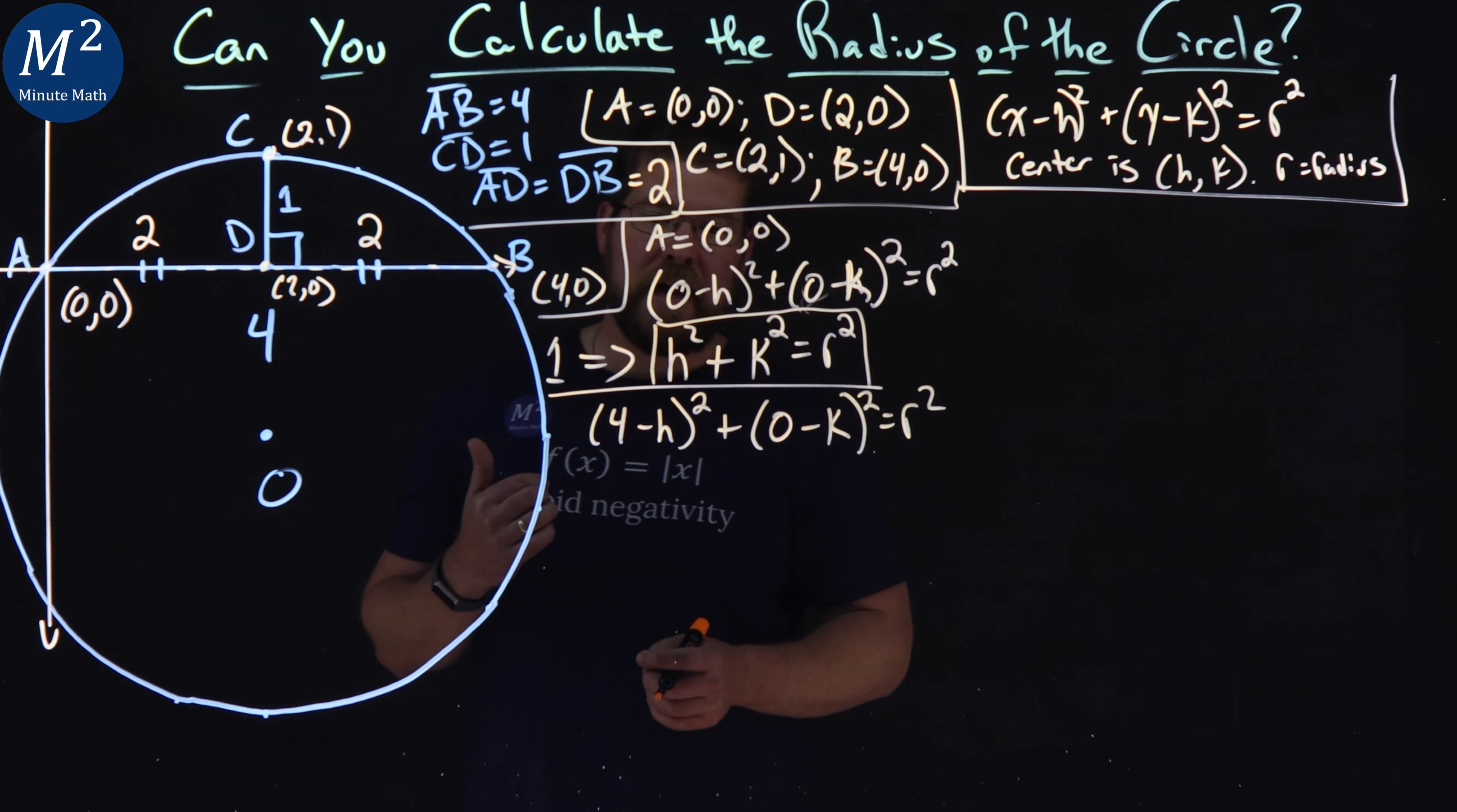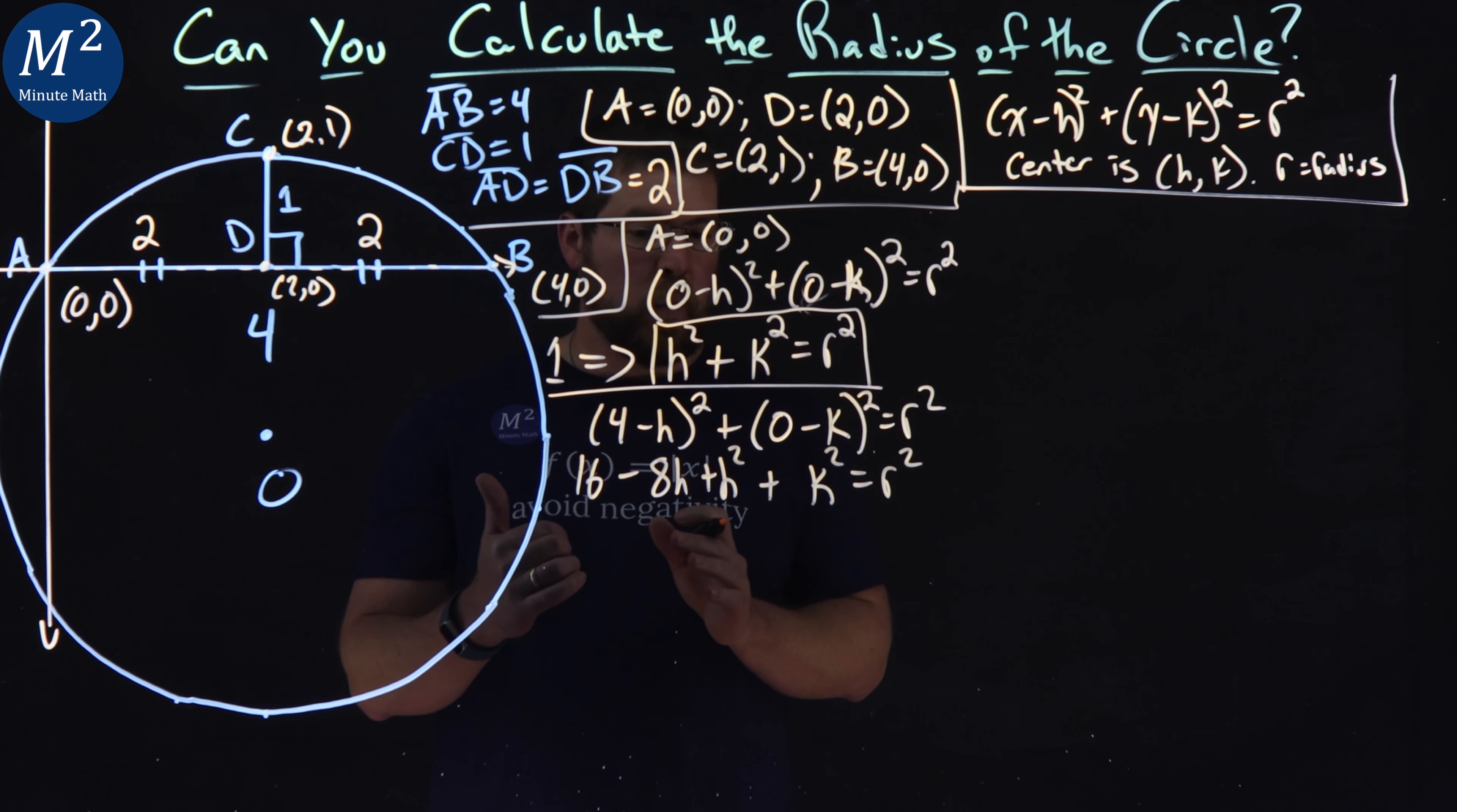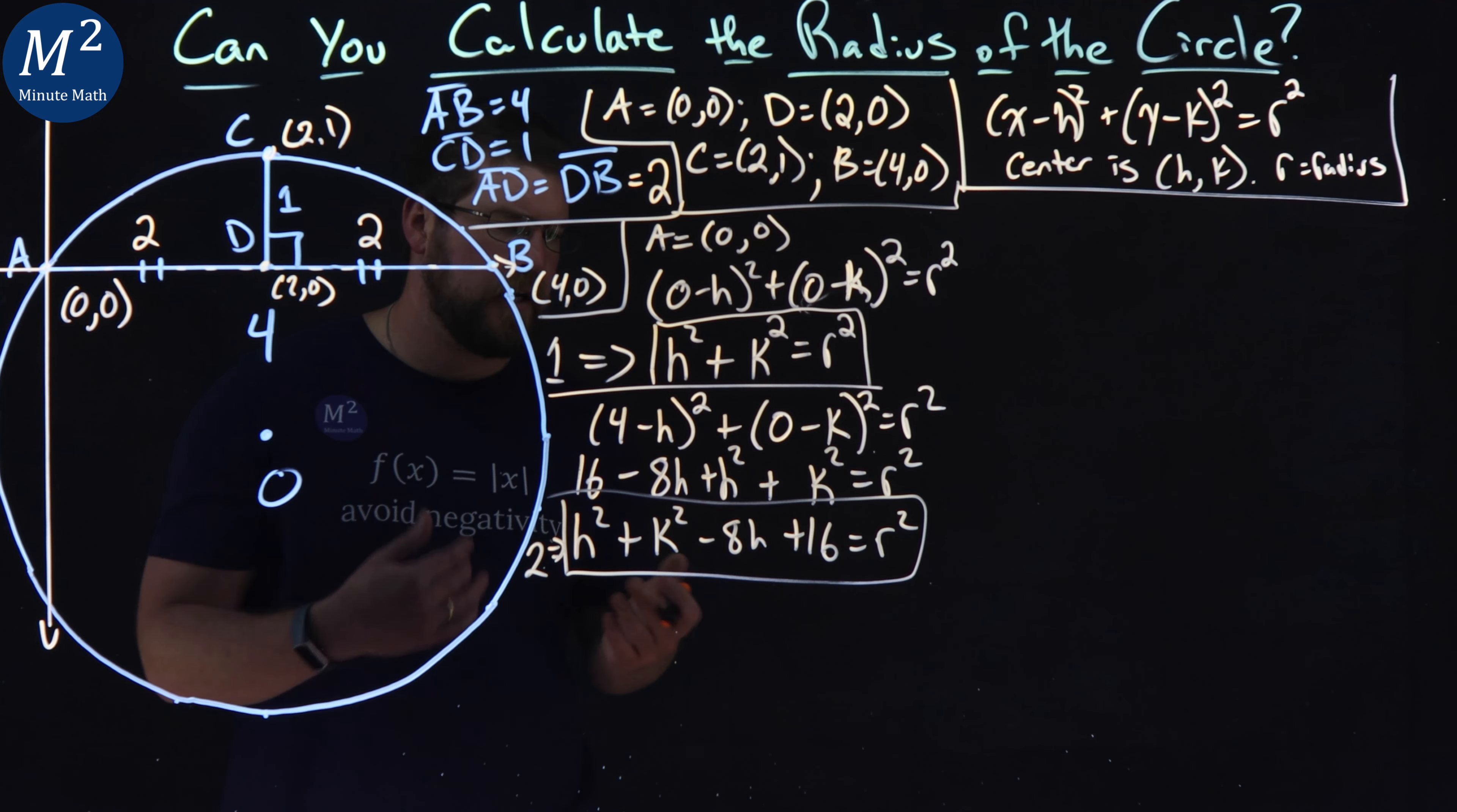From there, we want to simplify this out. We can multiply four minus H all squared, which is 16 minus 8H plus H squared plus K squared is equal to R squared. Now from here, I keep R squared by itself, but I reorder this to have our H's, our squared values first. So we have H squared plus K squared minus 8H plus 16 is equal to R squared. And here is we're going to have our equation two.